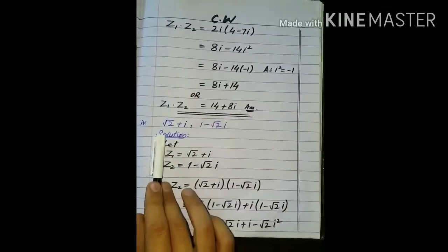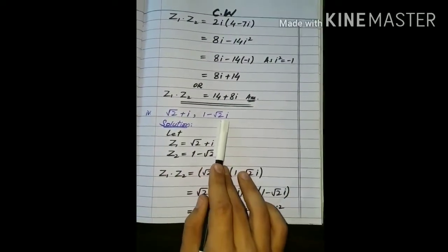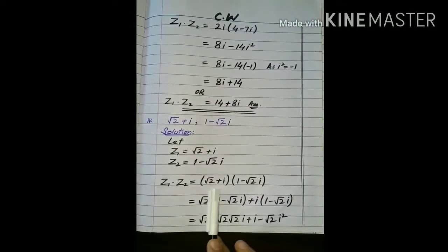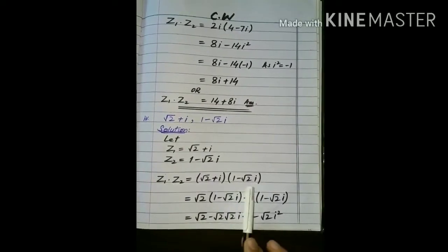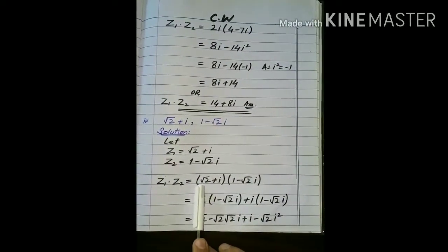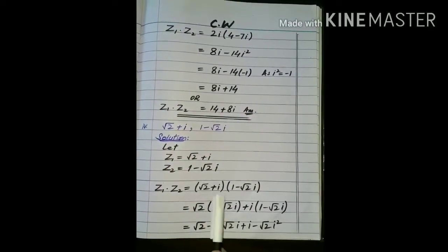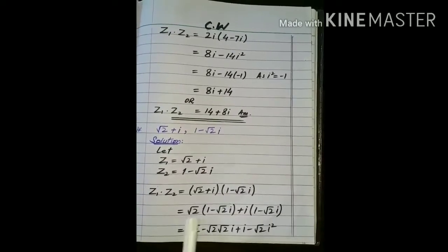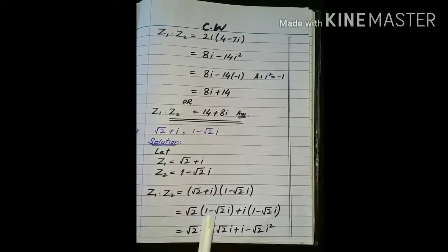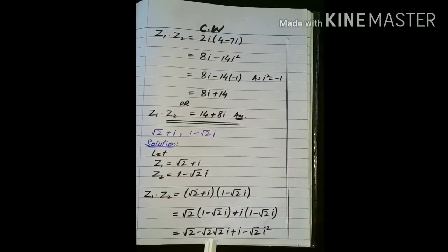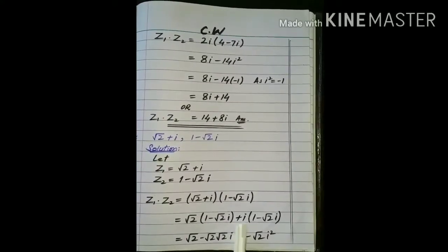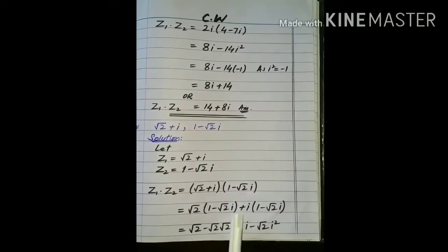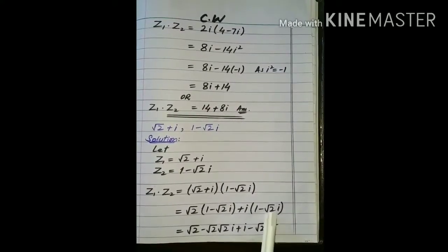چوتھا part: under root 2 plus iota اور 1 minus 2 under root 2 iota۔ ان دونوں کو Z1 اور Z2 نام دیا۔ multiply کرتے ہیں: under root 2 کو پورے parenthesis کے ساتھ multiply کریں گے پھر plus iota کو 1 minus under root 2 iota کے ساتھ۔ 1 کے ساتھ multiply کرو تو under root 2 آجائے گا، پھر minus plus minus: under root 2 into under root 2 آجائے گا، iota اپنی جگہ پر۔ پھر iota: 1 iota آجائے گا اور iota iota: iota square آجائے گا، under root 2 اپنی جگہ پر۔